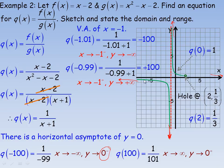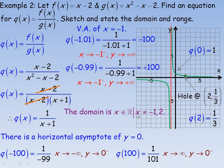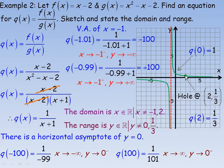The graph comes from the far left below the horizontal asymptote, drops steeply on the left side of the vertical asymptote at x equals negative 1, rises steeply on the right side, crosses the y-axis at 1, passes through the hole at x equals 2, then continues to the far right above the x-axis. The domain is all real numbers except x cannot equal negative 1 or 2. The range is all real numbers except y cannot equal 0 or one-third.